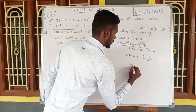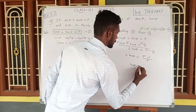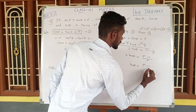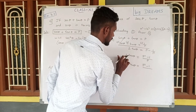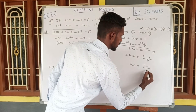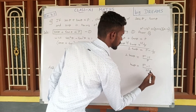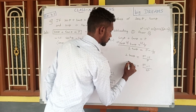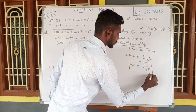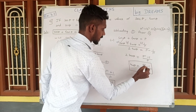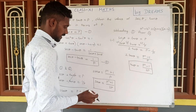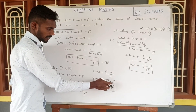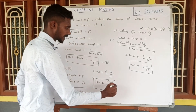Therefore, tan theta is equal to P squared minus 1 divided by 2P.